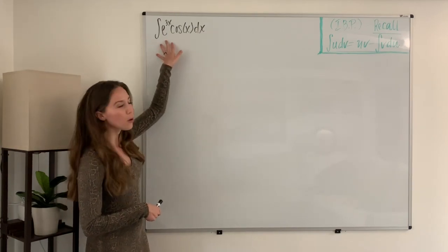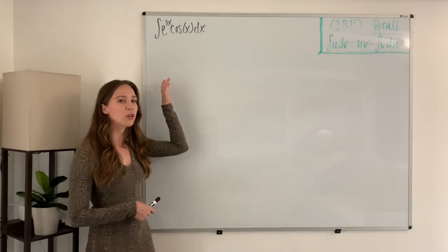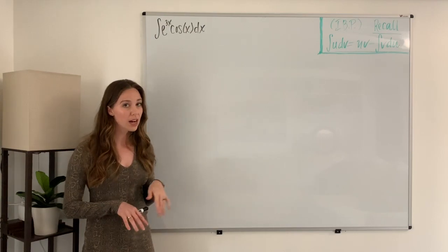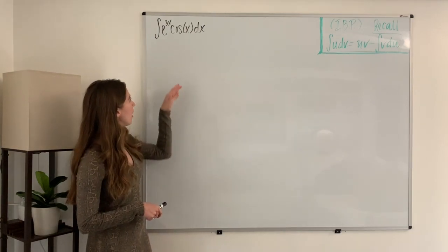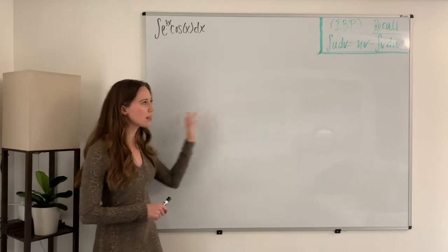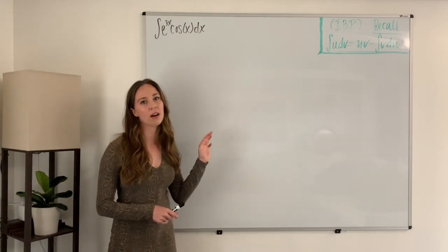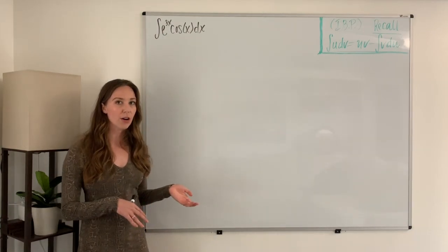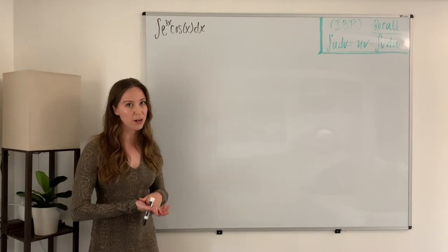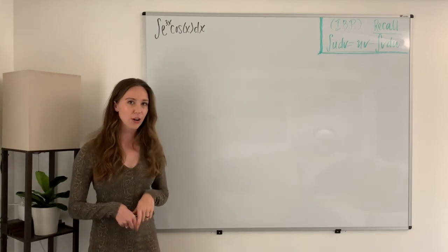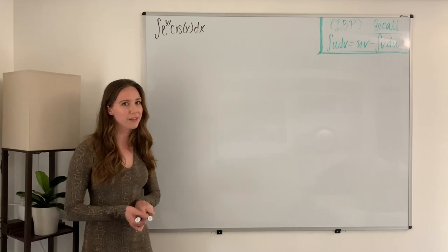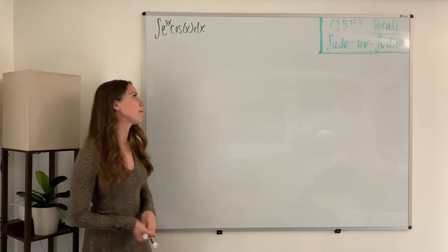So what we're going to look for is to do integration by parts a few times until we end up with the same integral that we started with somewhere in our equation. Then we can solve for that integral using very simple algebra. So let's go ahead and pick our u and our dv in order to solve this problem.